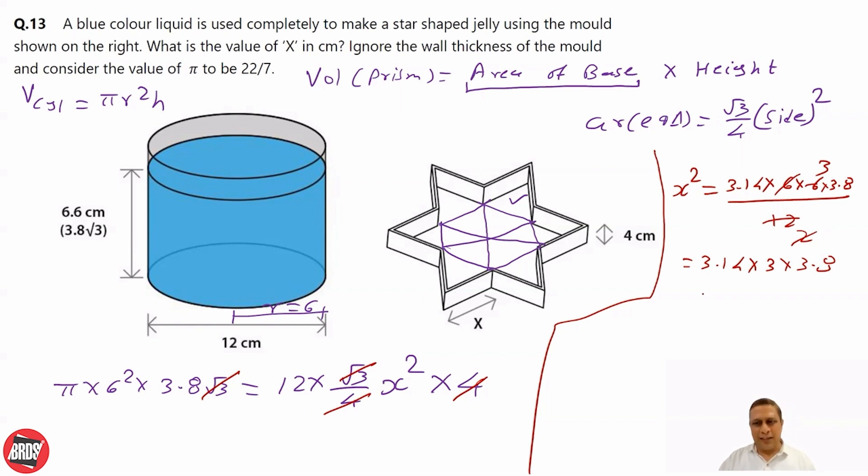Which will be approximately, this calculation you do, you will get approximately 35.8. So obviously it's not exact perfect square. We know 6 square is 36. It's slightly less than 6. Very slightly less. So X should be somewhere around 5.9. And that's the answer.